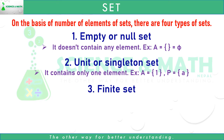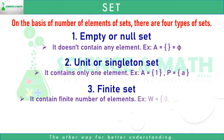Number three: finite set. Finite set contains a finite number of elements. For example, W equals the set of 0, 1, 2, 3, 4, up to 50.